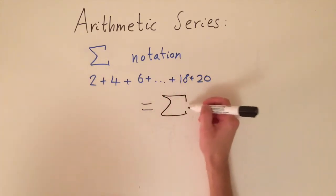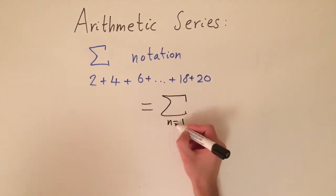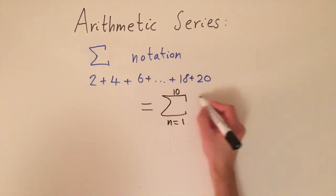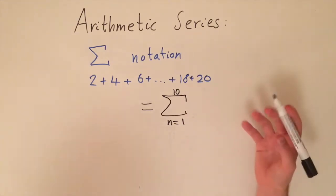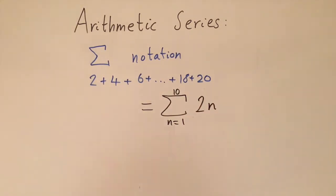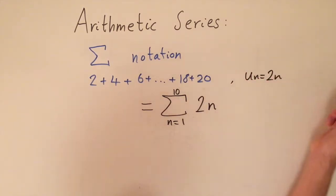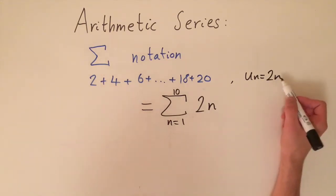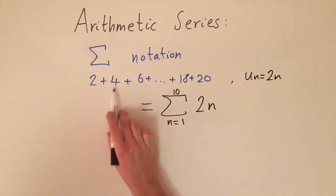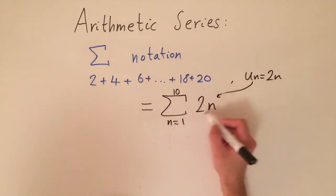We can write this using sigma notation. We write the letter sigma, then n is equal to 1 below it. We have 10 terms so we write 10 above. In front of the sigma we write the nth term formula — we're adding up the even numbers, and the nth term is 2n. So putting in any n gives 2 times that number: n=1 gives 2, n=2 gives 4, n=3 gives 6, and so on.